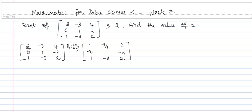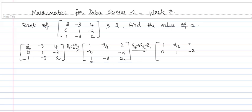The first entry in row 2 is already 0, so nothing needs to be done with the second row. For the third row, to make that entry 0, we do R3 = R3 - R1. This gives [0, -3 + 3/2, a - 2] = [0, -3/2, a - 2].